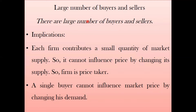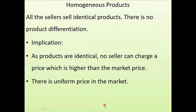The next feature is homogeneous products — homogeneous meaning identical. The commodity is identical in its color, quantity, and quality. In this perfect competitive market, we assume that all sellers are selling identical products. There are no significant differences among these commodities; they are very uniform in nature.